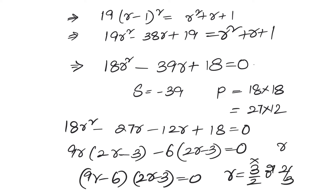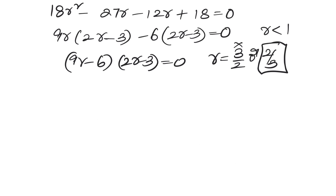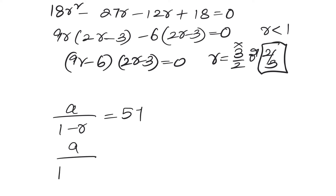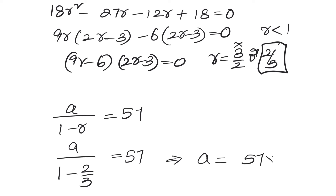Once we have R equals 2/3, we can easily calculate A using the first equation: A by (1 minus R) equals 57. Substituting R equals 2/3: A by (1 minus 2/3) equals 57, so A by (1/3) equals 57, giving A equals 57 times (1/3), which equals 19.